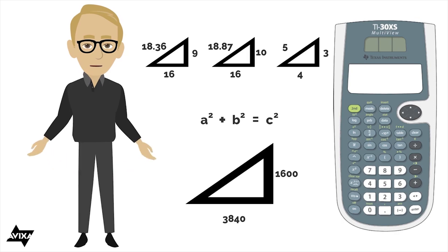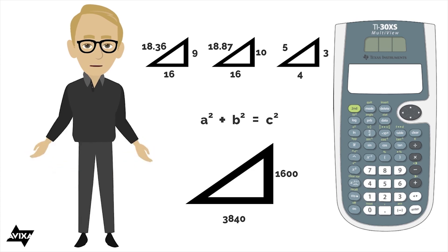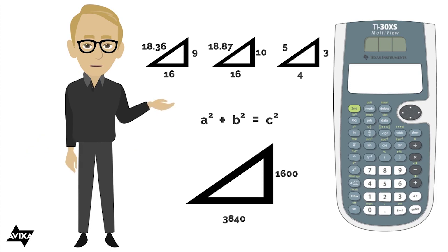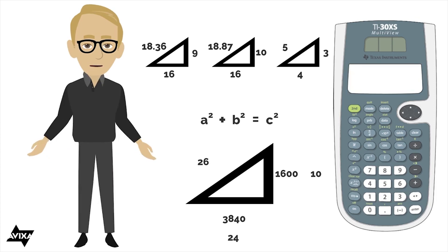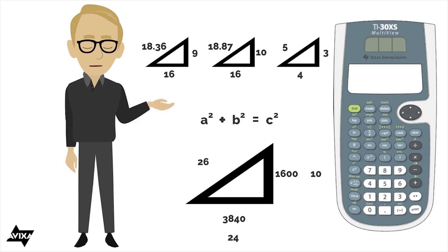Here's a 3840 by 1600 — a 24:10 display — that has a stated 37.5-inch diagonal. We can do the same thing: square root of (24² + 10²) gives us a diagonal relationship of 26. Now that I know that, I can go ahead and figure out the width and the height just like we did before.